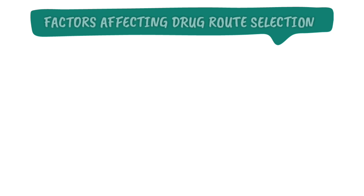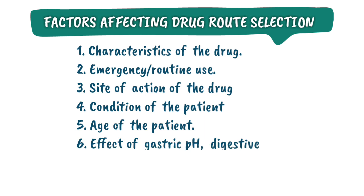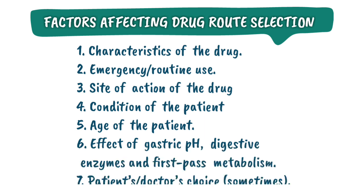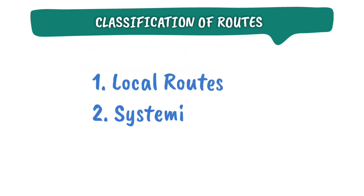The factors affecting route selection are: characteristics of the drug, emergency, routine use, site of action of the drug, condition of the patient, age of the patient, effect of gastric pH, digestive enzymes and first-pass metabolism, and patient's and doctor's choice. Routes of drug administration can be broadly classified into local routes and systemic routes.